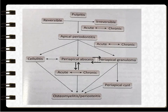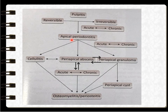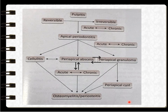This is a flow chart of the sequelae of pulpitis. Pulpitis can be reversible or irreversible, and irreversible pulpitis can be acute or chronic. Pulpitis leads to apical periodontitis, which can progress to cellulitis, periapical abscess, or periapical granuloma. Periapical granuloma can lead to periapical cyst or osteomyelitis. Periapical abscess can lead to osteomyelitis, and cellulitis can also lead to osteomyelitis.